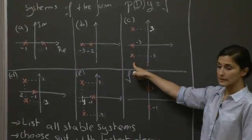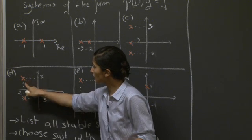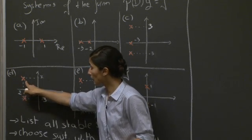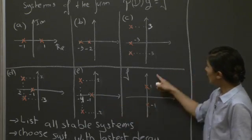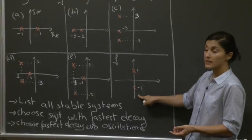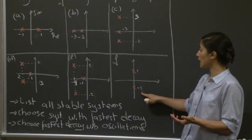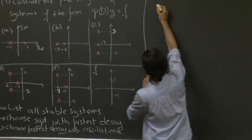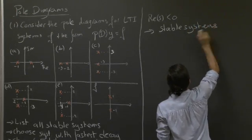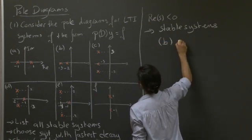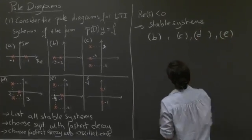For diagram C, all real parts are negative, so we are in the stable case. For D, the poles are at minus 2 ± 3i, so both have negative real part and everything is on the left side of the plane. The same applies to E. For F, the poles are right on the imaginary axis, which means we cannot determine whether there will be exponential decay or growth. So the stable systems are B, C, D, and E.